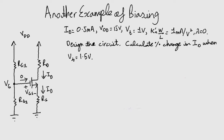After you have done that, you are also supposed to calculate the percentage change in ID when VT equals 1.5 volts. The rest of the characteristics of the MOSFET remain the same. So let's do this.